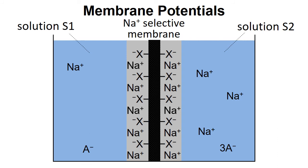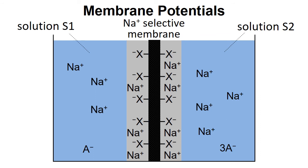Now let's look at the situation where the concentration is different in both solutions. In solution S2 the concentration is higher, and in solution S1 the concentration is lower. At equilibrium, solution S1 has a slightly more positive charge. Overall the separation of charge is different and so we will get a potential difference across the membrane.